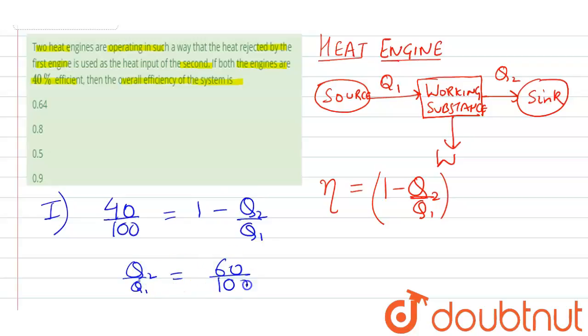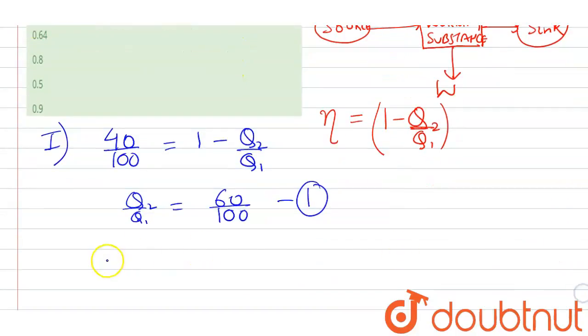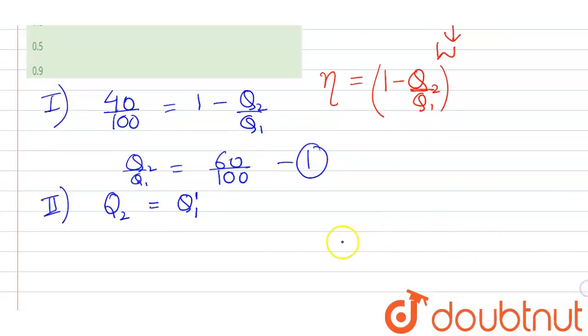This will be the first equation. Now it is written that the heat rejected by the first engine, that is Q₂, is equal to heat input, that is Q₁'.